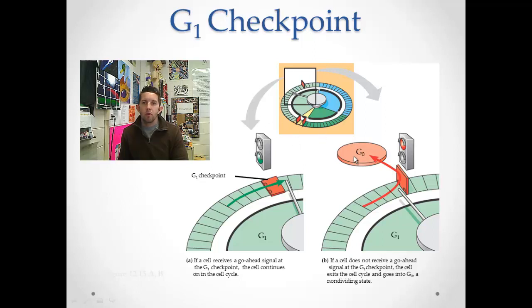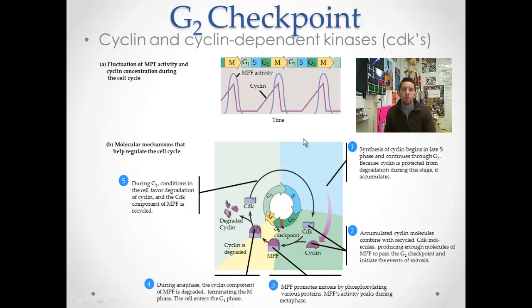So that G1 checkpoint has to do with moving cells out of this holding pattern that is G0. The G2 checkpoint is right at the end of G2, just before a cell is going to progress into prophase and begin mitosis. It involves proteins called kinases, and specifically cyclin-dependent kinases, or CDKs for short. These kinases, recall, these enzymes phosphorylate things. They add a phosphate to different things to progress some kind of process. And these are dependent, as their name states, on cyclin, another protein.